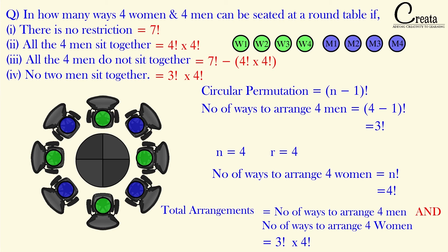An important distinction: the third and fourth parts are different. In the third part, all 4 men do not sit together — meaning 2 or 3 men can still sit together. In the fourth part, no 2 men sit together at all. There is a huge difference. You must read the wording of the question carefully, especially in permutation, probability, and combination problems.